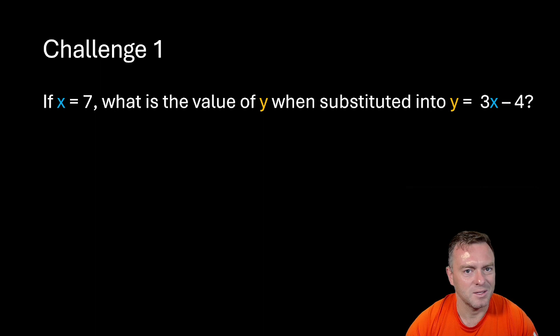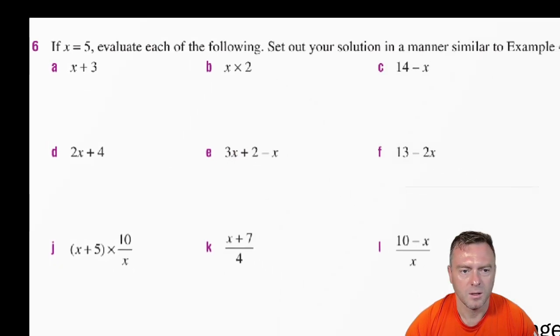Awesome. So what you should find is x is equal to 7 and we substitute in the y value. We would do y is equal to 3x minus 4. So then we've got y is equal to 3 lots of 7 minus 4 which then gives you 17. Cool.